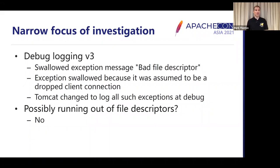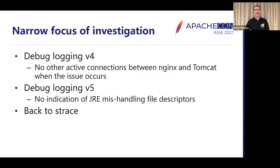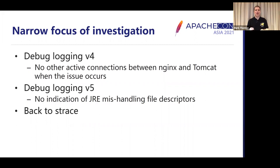So now we know there's a bad file descriptor. That normally means a socket's been closed — but just check: did we run out of file descriptors? No, we've got absolutely loads, nowhere near any limits. The next debug logging looked really closely at the connections between NGINX and Tomcat, and what we were able to show was that at the point where the issue occurred, that was the only connection active between NGINX and Tomcat at the time, which rules out any strange threading issues. Debug logging version five had some very invasive reflection — it went deep down into the JRE looking to see if the JRE was mishandling a file descriptor. To be honest, that was a bit of a reach — there haven't been bugs like that in the JRE since the days of Java 1.2, 1.3.